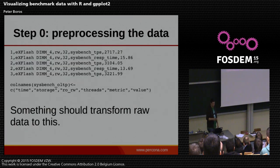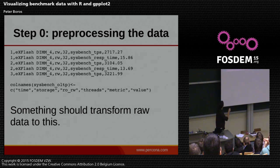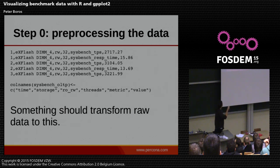In order to use the stuff I'm going to use here, we have to preprocess the data to put it into our data frames. For that, the data needs to be in this format. The first column is second. You can see from the R code, from the column names, what it actually means. This means that for the first second of the benchmark on this storage device, it was a read-only test with this many threads. The metric is Sysbench transactions per second, and the value is more than 2,000.